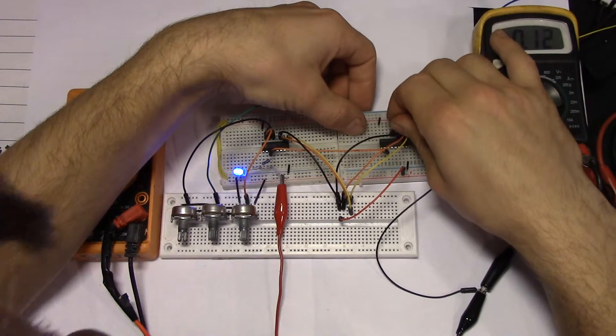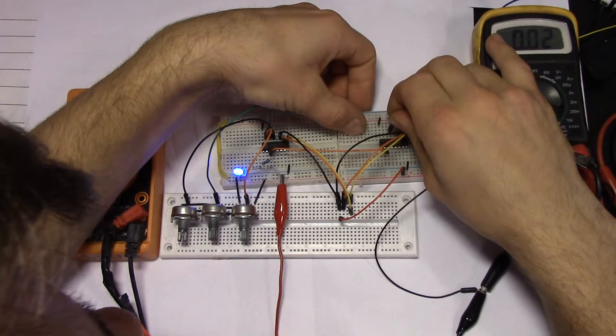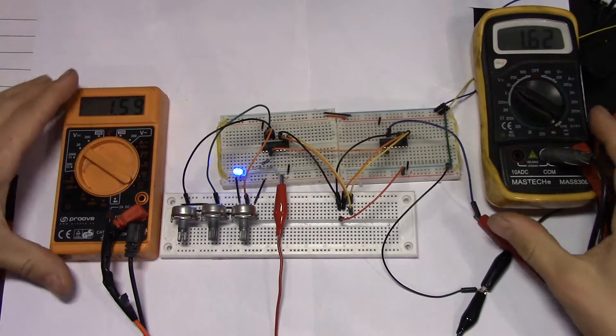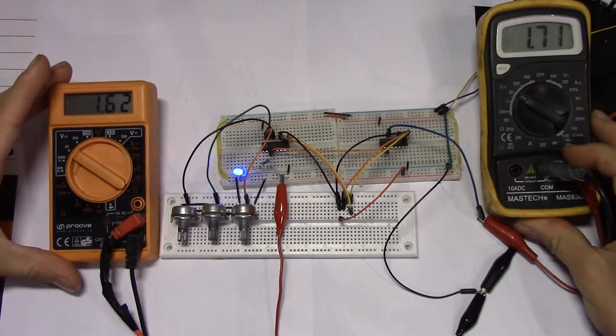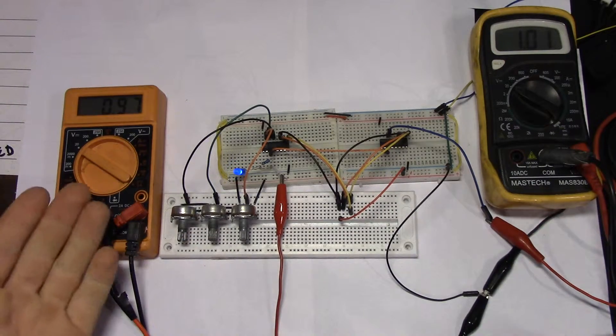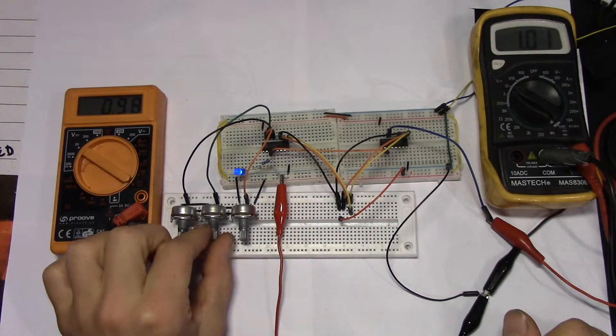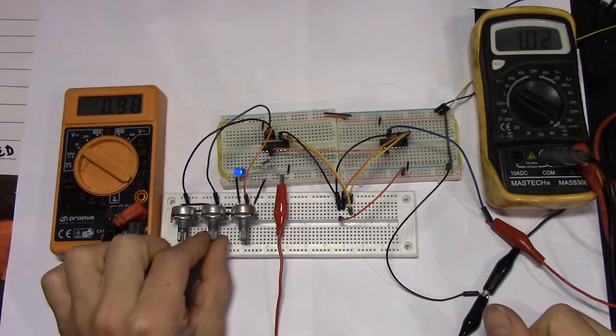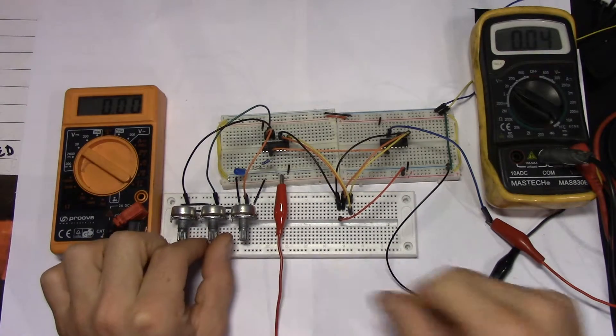So if I go from this channel to the next channel over here, you can see that now I have a reading on both meters. So that's basically it. If I turn this down, it will go down on both of the multimeters and also on the LED, as you can see.